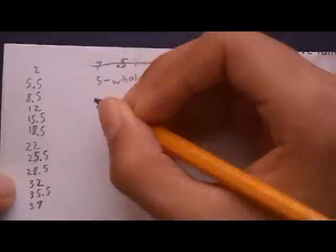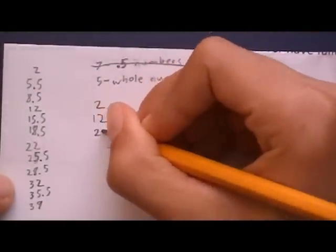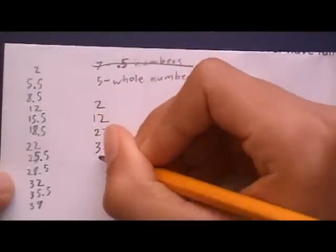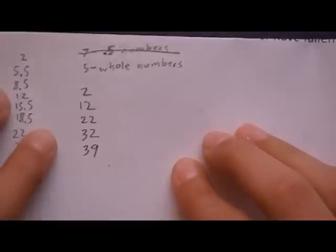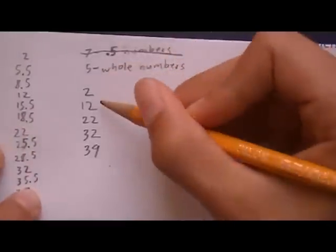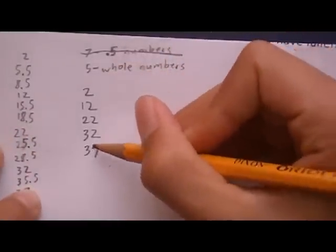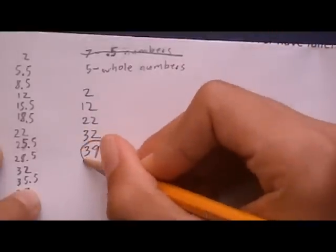I ended up with 2, 12, 22, 32, and 39. So these numbers, as you can see, they all end in 2's except for one number, 39. This is the third number to your combination.